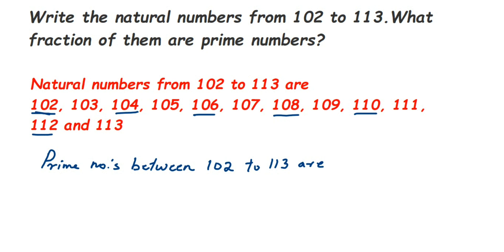One more thing: numbers ending with 5 or 0 go in the 5 times table, so 105 is also not a prime number. It goes in the 1 table, the 5 table, and the 105 table — that's more than two factors. So only the leftover odd numbers need to be checked.